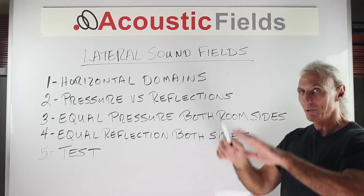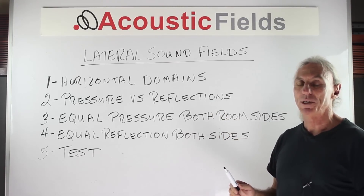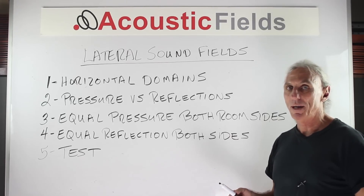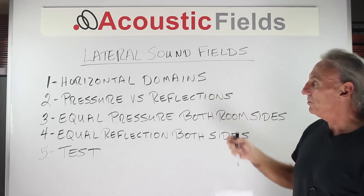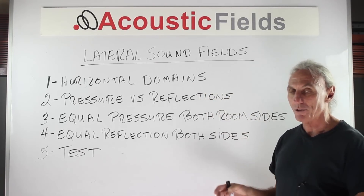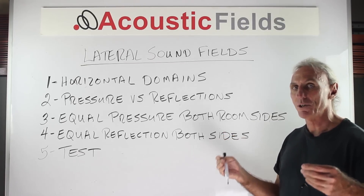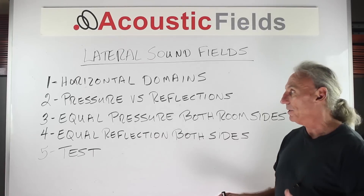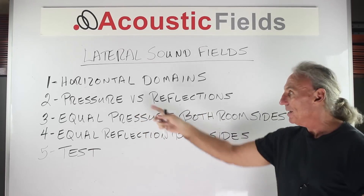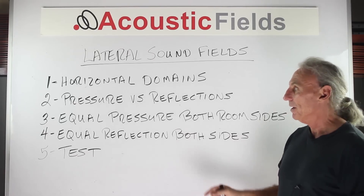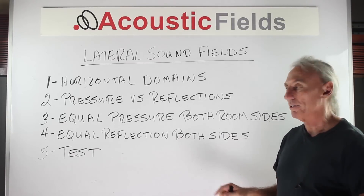What are we trying to accomplish within this domain? At the end of the video, I'm going to show you a graphic with some testing procedures that you can do at home to see how well you've managed to control the lateral sound field in your listening or control room. We're going to talk about pressure versus reflection, because those are the two things that we have to deal with: low frequency pressure and reflections off the room surfaces. Every phenomena in room acoustics can be broken down into pressure and reflections. So how do we want to treat the pressure and reflections in the horizontal and lateral domain?